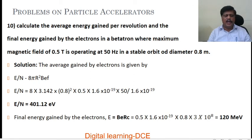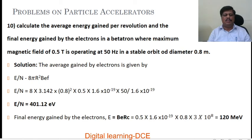Substituting all the values: 8, pi value, radius — note the diameter is 0.8 m so radius r equals 0.4 m — magnetic field 0.5 tesla, charge on the electron, frequency 50 Hz. Divide by 1.6 into 10 power minus 19 and simplify. By substituting radius 0.4 meter, we get average energy gained by the electron equal to 401.12 eV.